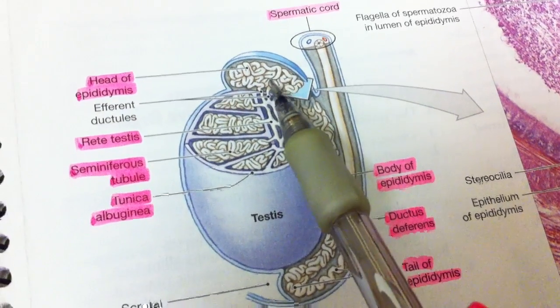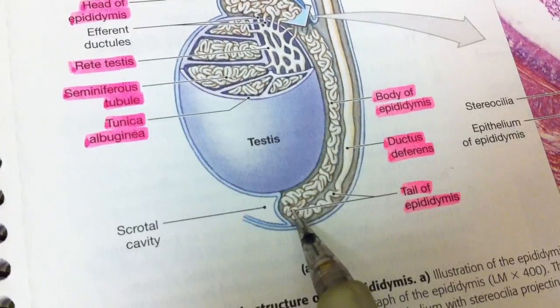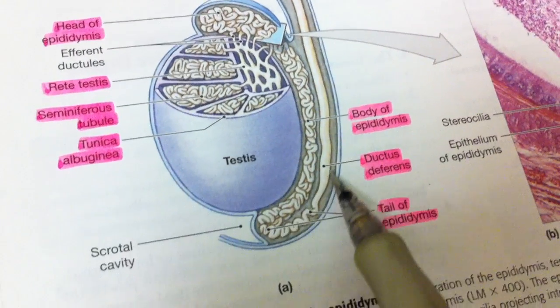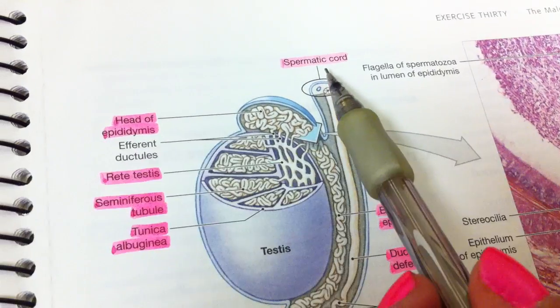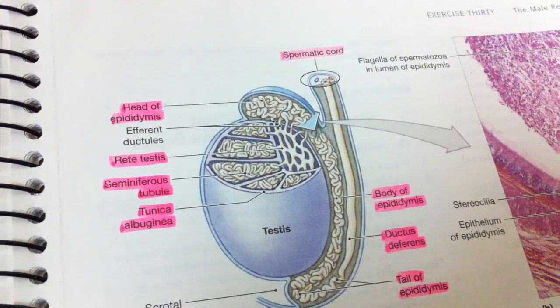This is the head of the epididymis. It goes down the body to the tail, and then it enters the vas deferens and goes up to the spermatic cord, and then it goes on its way to its route.